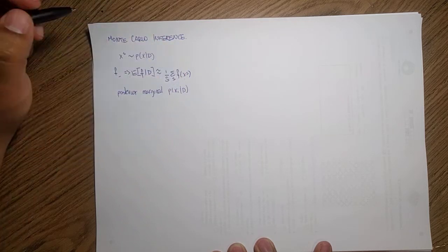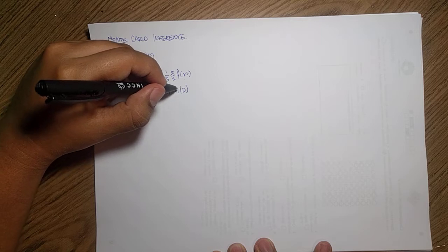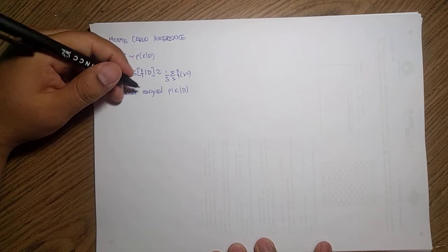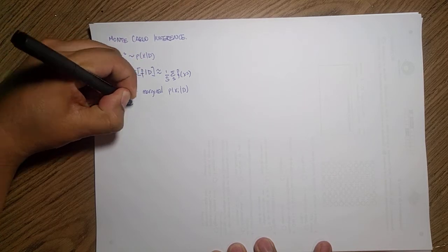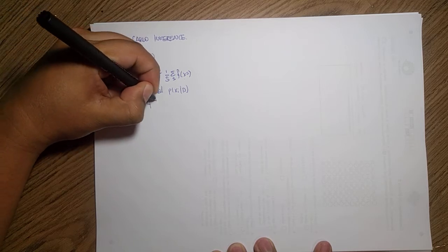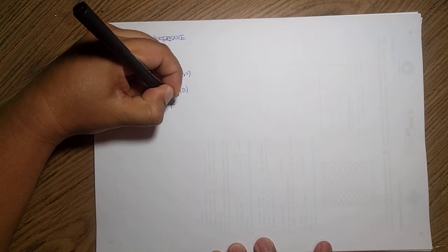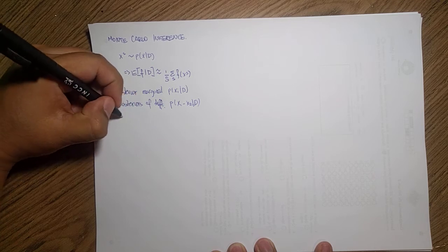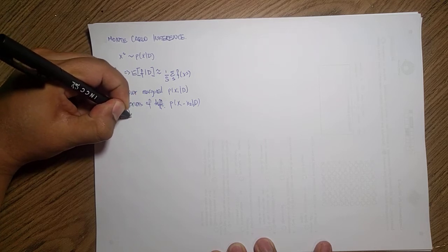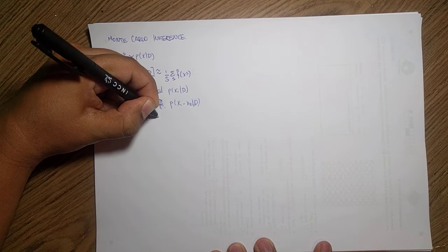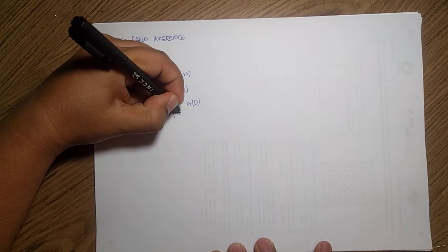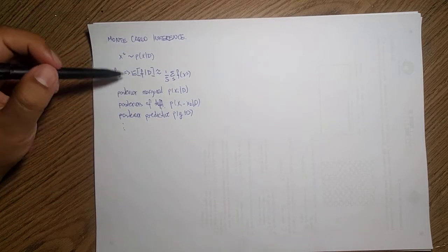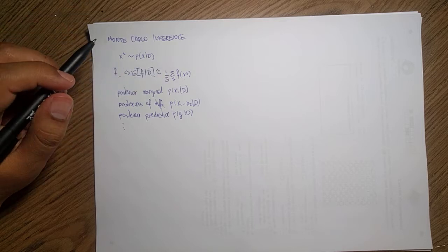You can simply take the i-th feature you want and compute the average of those posteriors. You can compute posteriors of differences — for instance x1 minus x2 given your data. You can compute a posterior predictive and predict your y's given your data, and so on. Any function f that you can think of you can simply apply through this method.